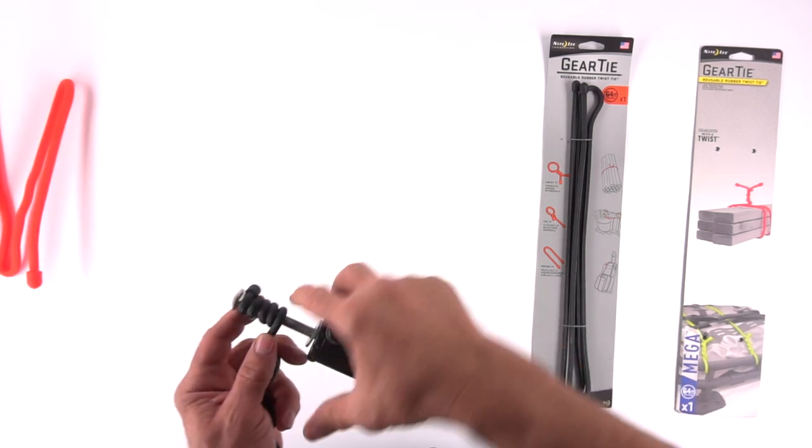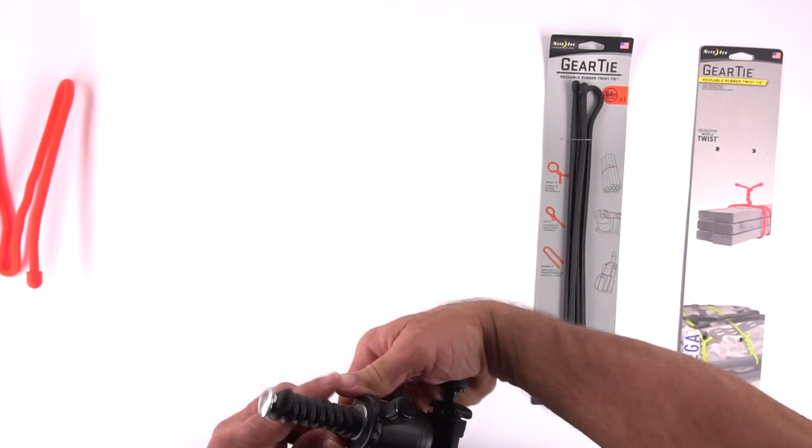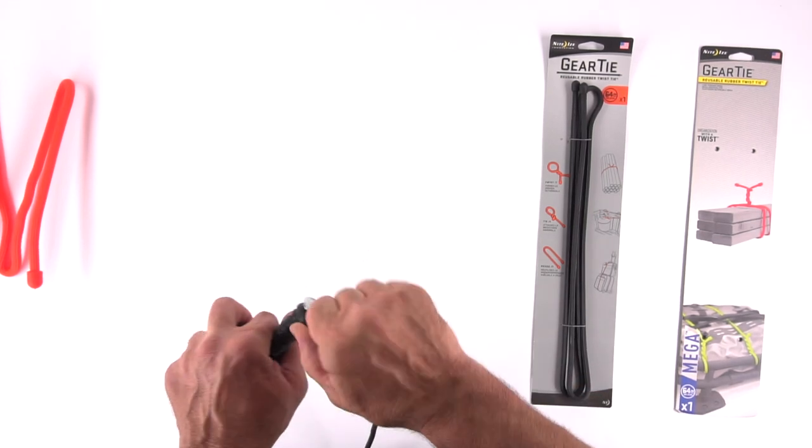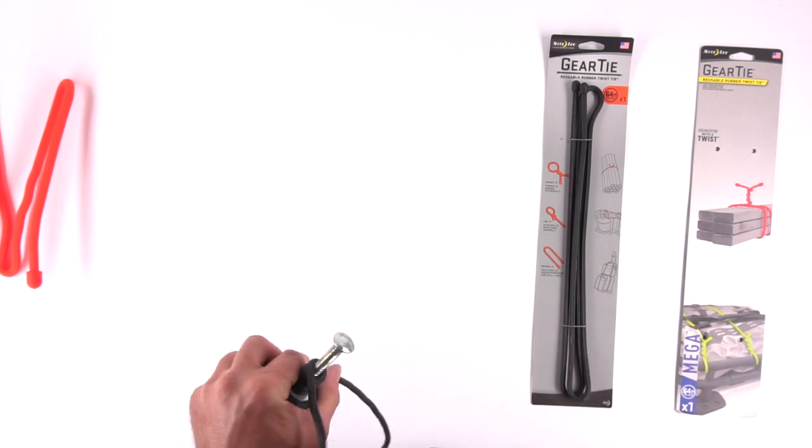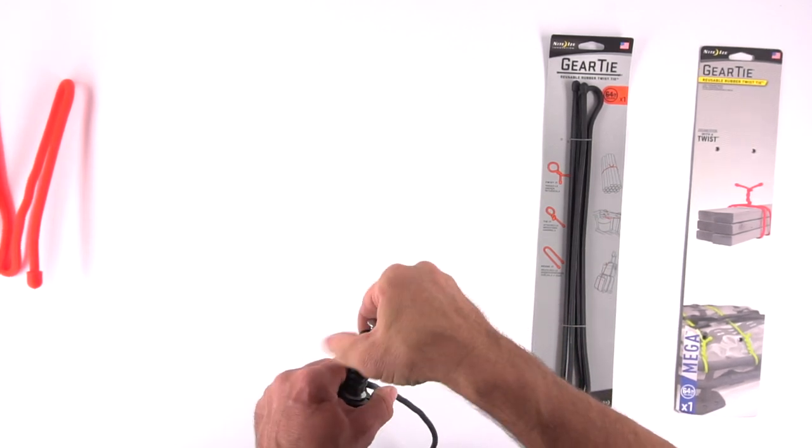So the first thing you want to do is wrap the skinnier gear tie around the bolt. This will give it something to grip to. Now I like to wrap it around there. And then the first part always seems to be a little loose. So I'll unwrap that a little bit, and then wrap it again tightly. And that just gives it a nice snug fit on the bolt.